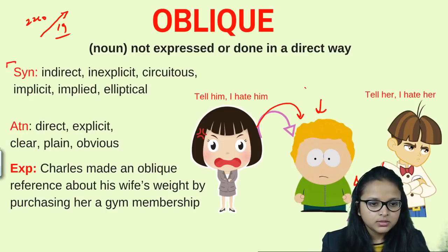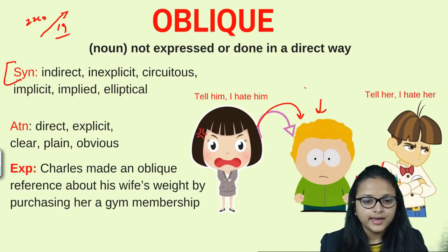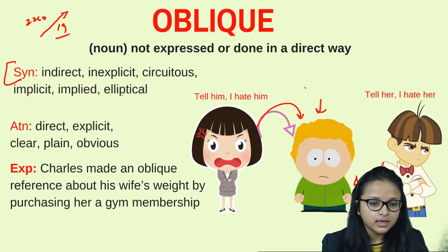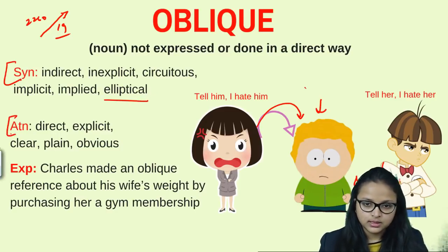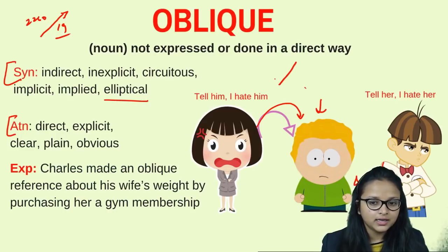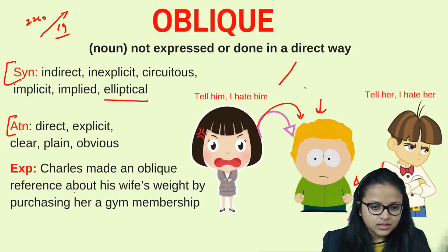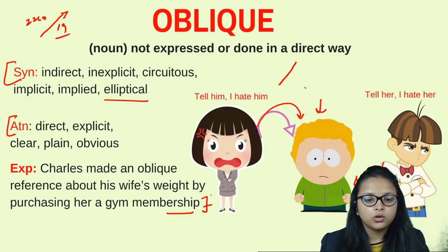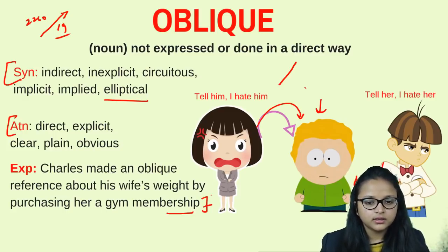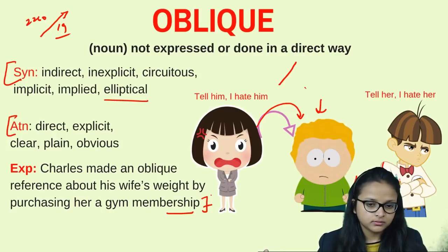Synonyms of oblique: indirect, inexplicit, circuitous, implicit, implied, elliptical. Antonyms: direct, explicit, clear, plain, obvious. Example: 'Charles made an oblique reference about his wife's weight by purchasing her a gym membership' — he didn't want to hurt her by saying she was getting fat, so it was an indirect, oblique reference.